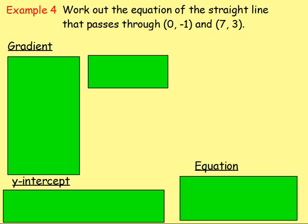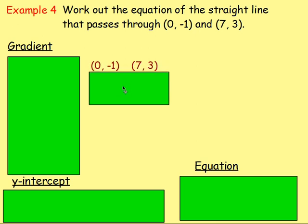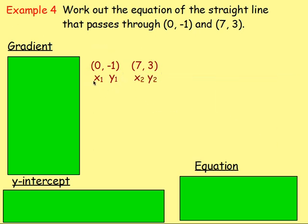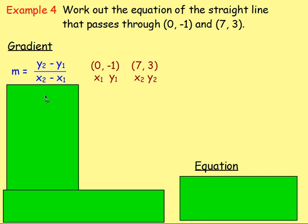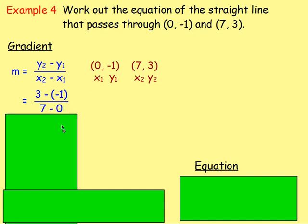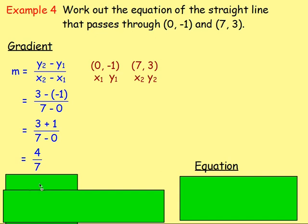Example 4: work out the equation of the straight line that passes through 0, negative 1 and 7, 3. There's no graph drawn, but that doesn't matter — we follow the same steps. Write down the two points, label x1, y1 and x2, y2. Using the formula y2 take away y1 over x2 take away x1: 3 take away negative 1 over 7 take away 0. 3 take away negative 1 becomes 3 add 1, giving 4 over 7. Can we simplify four sevenths? No — so we leave it as four sevenths.